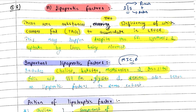To remember the important Lipotropic Factors, use the mnemonic MIC B: M — Methionine, I — Inositol, C — Choline, B — Betaine. The rest are also involved: Vitamin B12, Glycine, and Serine.